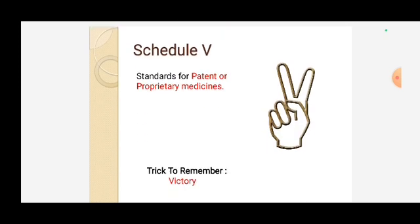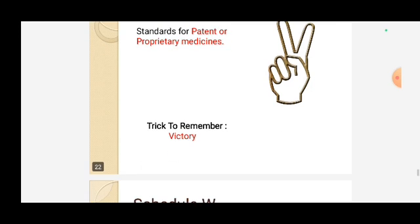Schedule V — the trick is 'V for Victory.' If you have a patent, it is a victory for a company or person. So Schedule V is the standard for patent or proprietary medicines. Trick: Victory.